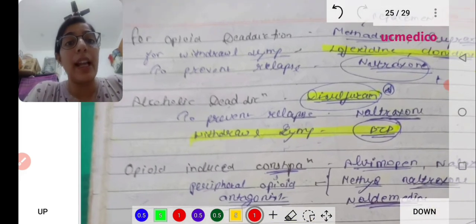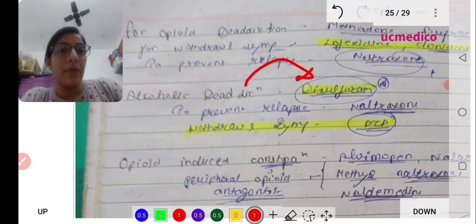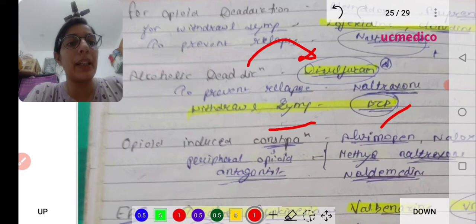Alcoholic de-addiction - you already know disulfiram. To prevent relapse, naltrexone. For withdrawal symptoms, we give benzodiazepines.